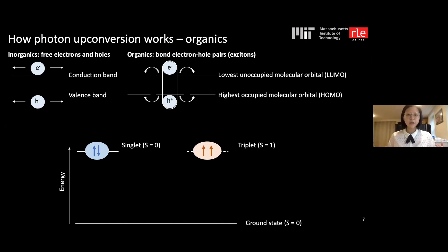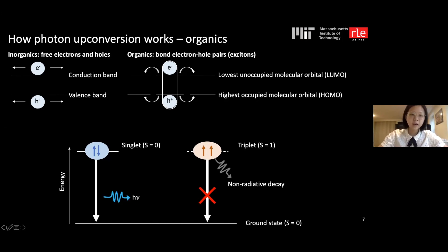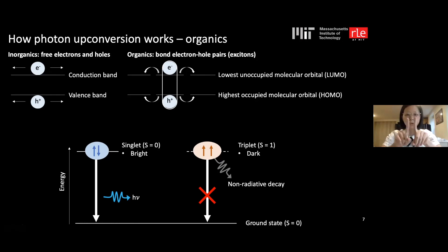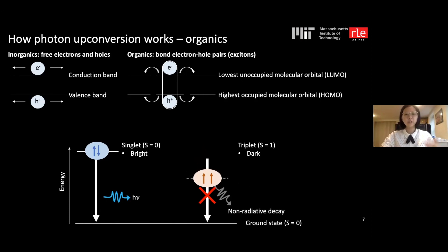Singlet and triplet excitons have different properties. Since the ground state of organic materials is mostly singlet in character, singlet excitons decay through light emission — they are bright states. Triplet excitons cannot emit light and decay through heat or non-radiative pathways — they are dark states. Additionally, the parallel spin in triplets causes stronger Coulombic repulsion, pushing the electron-hole pair further apart and lowering the triplet energy, so singlet excitons typically have higher energy than triplet excitons.